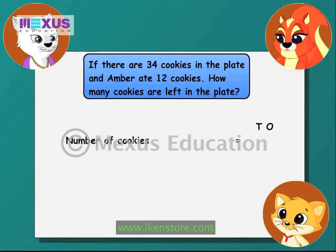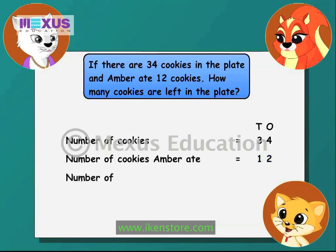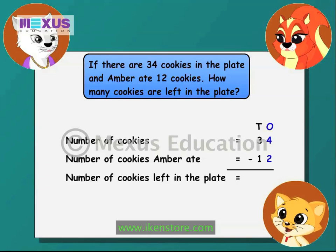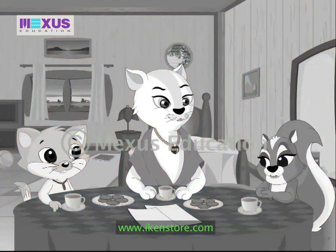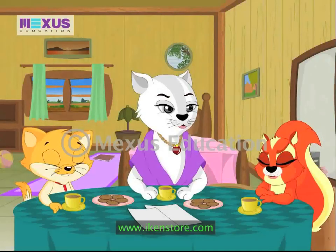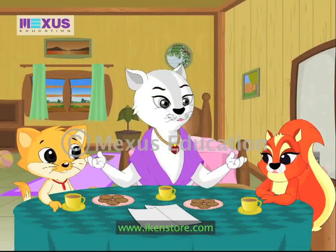The number of cookies is 34 and the number of cookies Amber ate is 12. So the number of cookies left in the plate is 34 minus 12. First, I will subtract the numbers in the ones column: 4 minus 2 is equal to 2. Next, we subtract the numbers in the tens column: 3 minus 1 is equal to 2. So 34 minus 12 equals 22. Amber ate 12 cookies — I mean, I ate 12 cookies. Awesome! That is the correct answer.